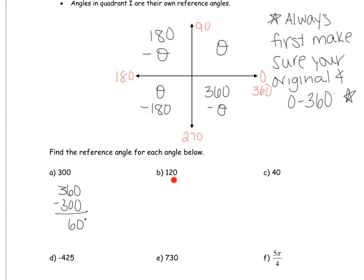For 120 degrees — that's quadrant two — we do 180 minus 120, which is 60. Example C is 40 degrees, which is in quadrant one. If we're in quadrant one, it's its own reference angle, so the reference angle is 40.